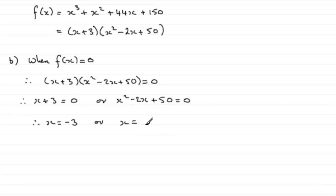So using that formula, we end up with x equals 2 plus or minus the square root of minus 2 squared minus 4 times 1 times 50, all divided by 2 times 1.